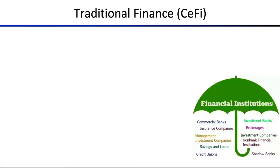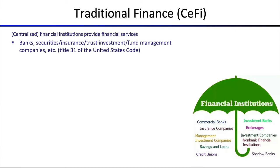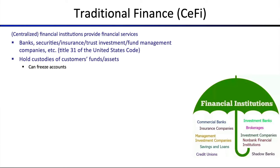So what about traditional finance, which we will refer to as CiFi or centralized finance? Traditional finance is governed by centralized financial institutions that provide financial services such as banks, securities, insurance, trusts, and fund management companies. These are called custodians because they hold custody of the customer's funds. In blockchains, if you hold a Bitcoin via a private key that you don't tell anyone about, then you can be considered a custodian of your Bitcoin.